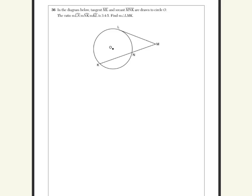It tells you some stuff about the arcs in this circle. It tells you that ln and kn and kl are in a ratio of 3 to 4 to 5. So, we know that a circle equals 360 degrees.